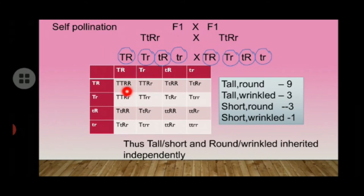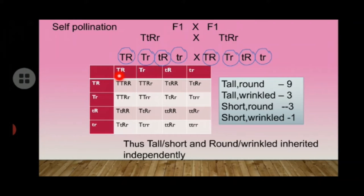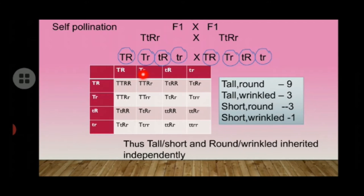To find the possibilities of the genotypes in F2, we have to make a checkerboard (Punnett square). We write the gametes on the sides and then combine both gametes to fill the boxes. For example, when TR combines with TR, we get TTRR.